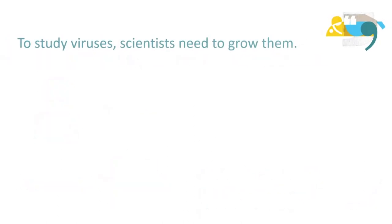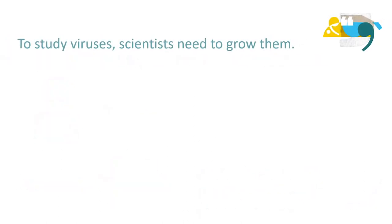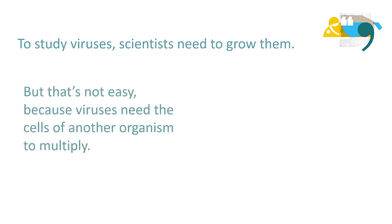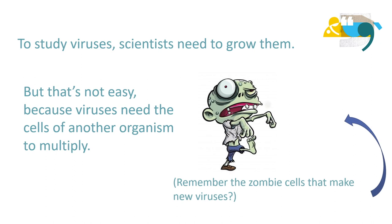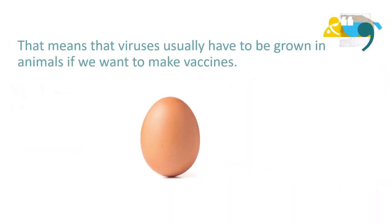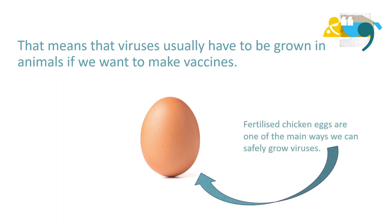To study viruses, scientists need to grow them. But that's not easy, because viruses need the cells of another organism to multiply — remember the zombie cells that make new viruses? That means that viruses usually have to be grown in animals if we want to make vaccines. Fertilised chicken eggs are one of the main ways we can safely grow viruses.